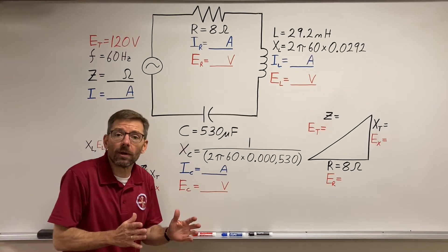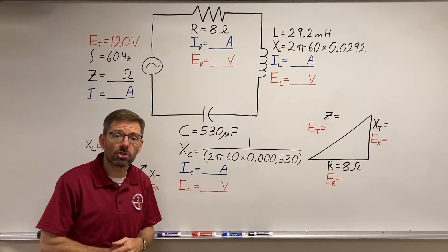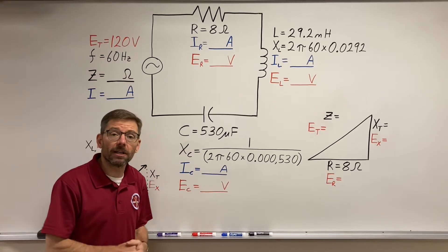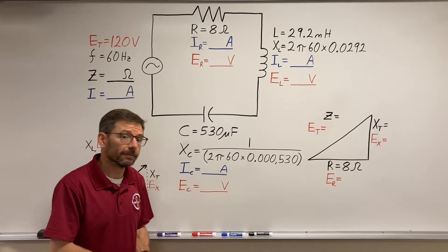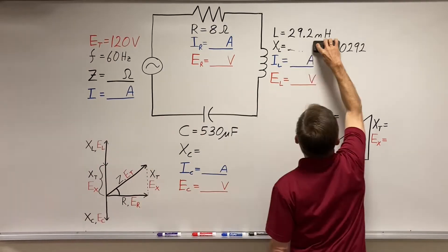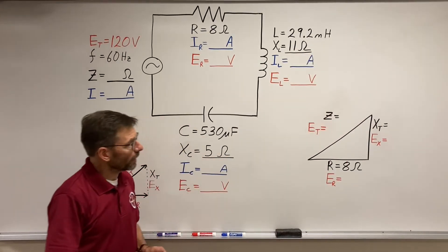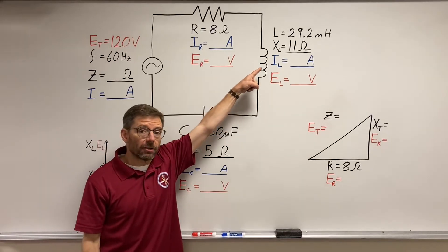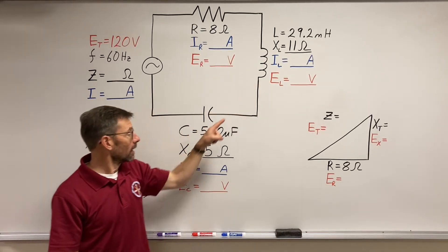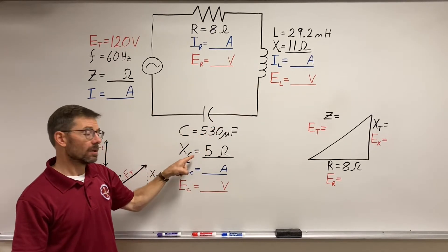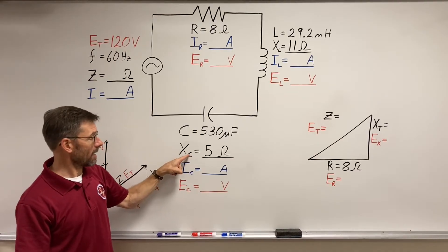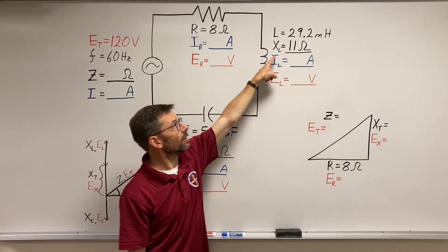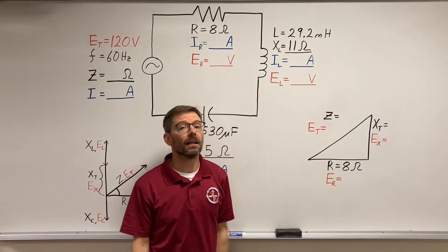Feel free to pause the video anywhere along the way and try and do the calculations yourself, and then restart it again. But here, we'll do it in our head here. That's right. Hopefully you got 11 ohms on the inductor and 5 ohms on the capacitor. Capacitive reactance 5 ohms, inductive reactance 11 ohms.